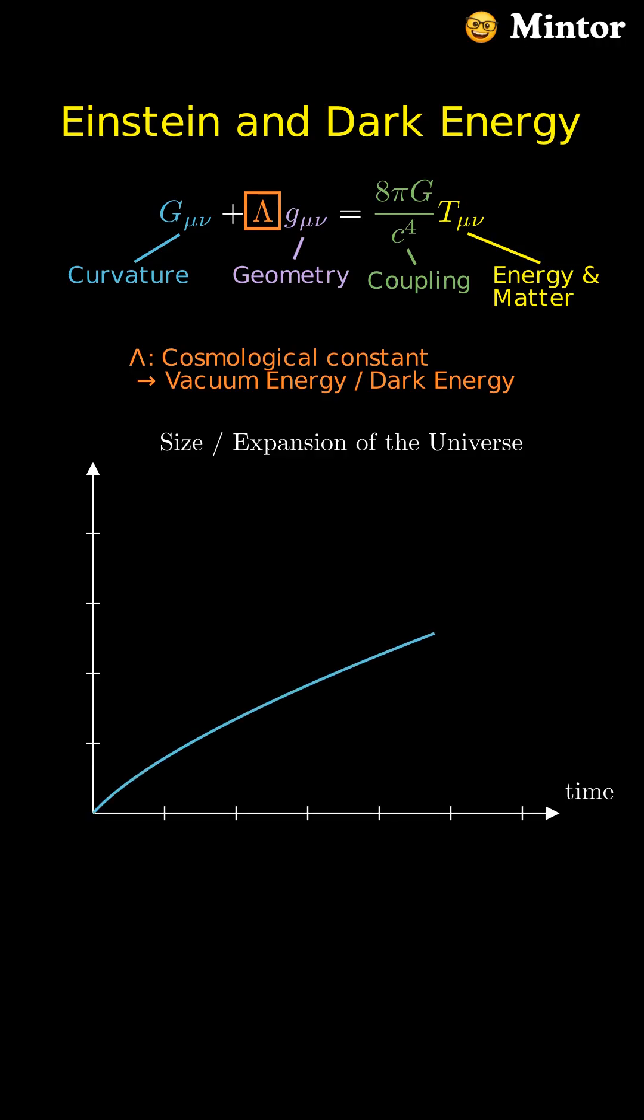If the cosmological constant is zero, space-time evolves only under matter and radiation, and the expansion of the universe will slow down and eventually stop.